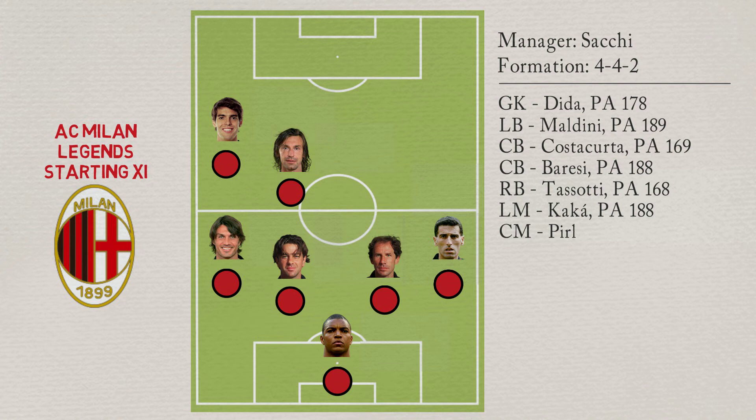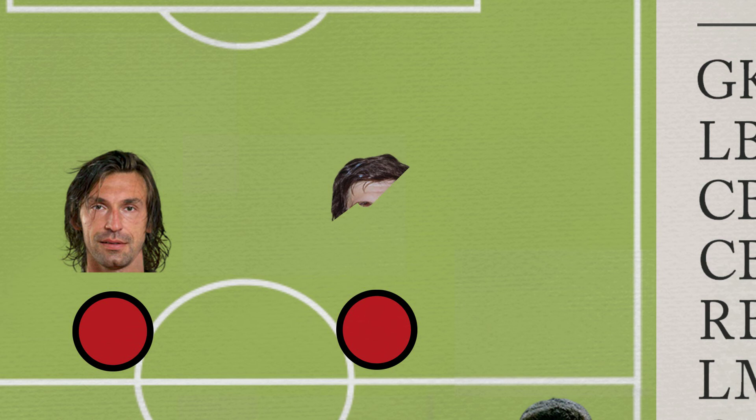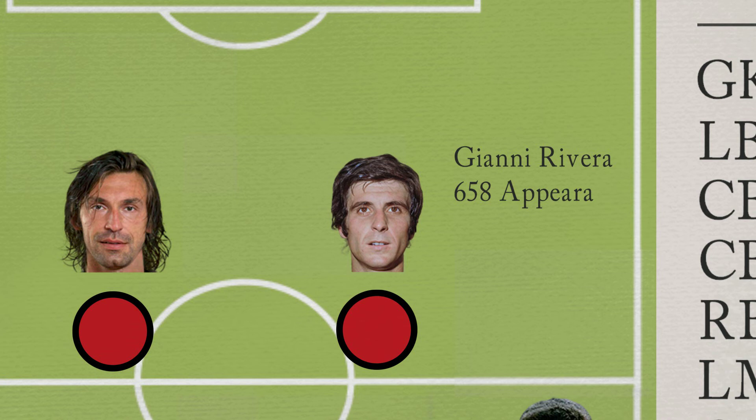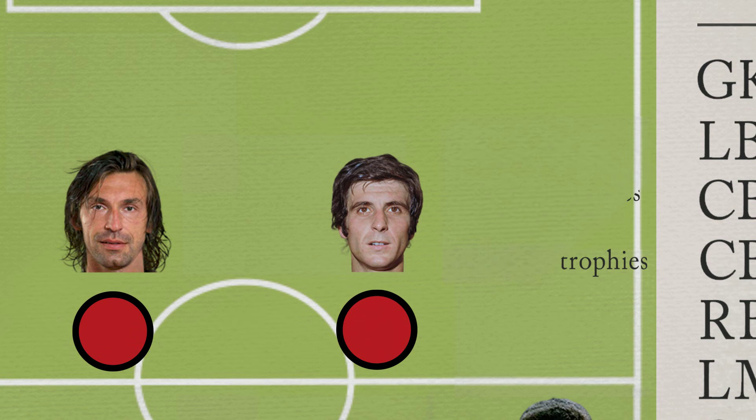The other central midfielder is Gianni Rivera. In total he made 658 appearances and scored 164 goals, winning 12 major trophies with the Rossoneri. Rivera has a potential ability of 181.